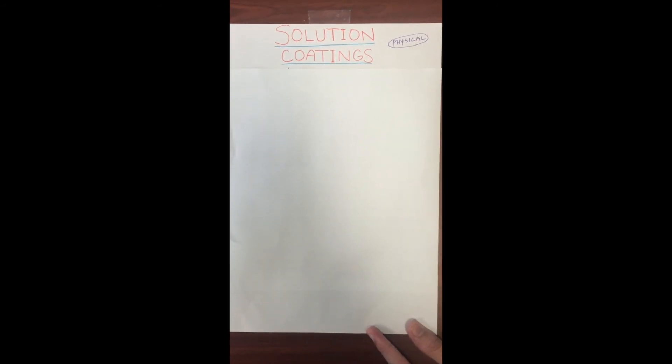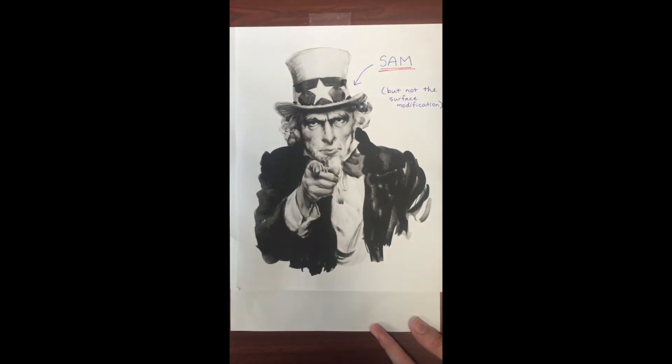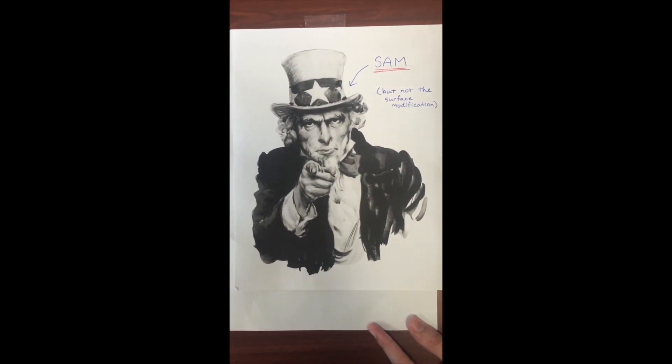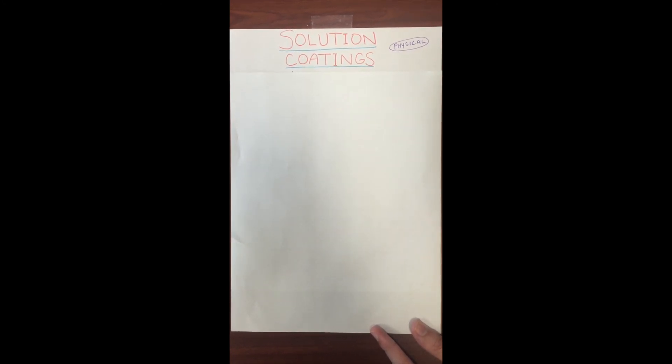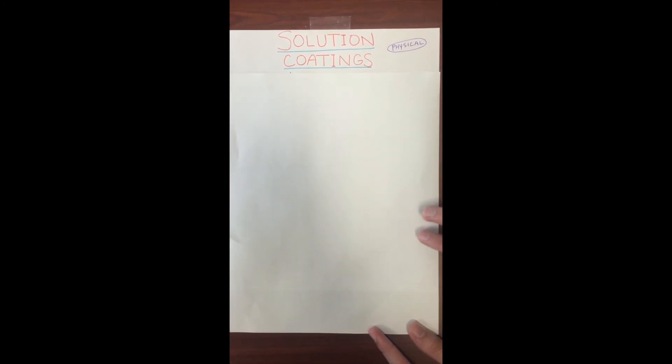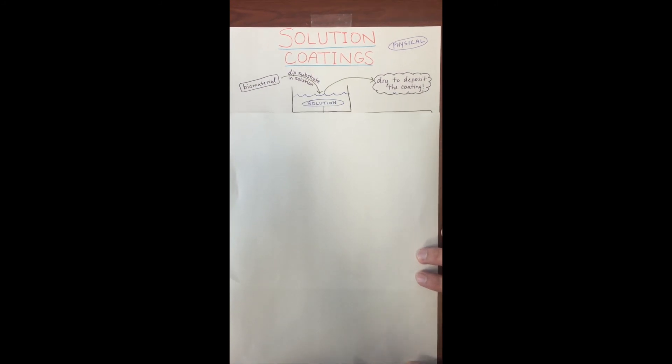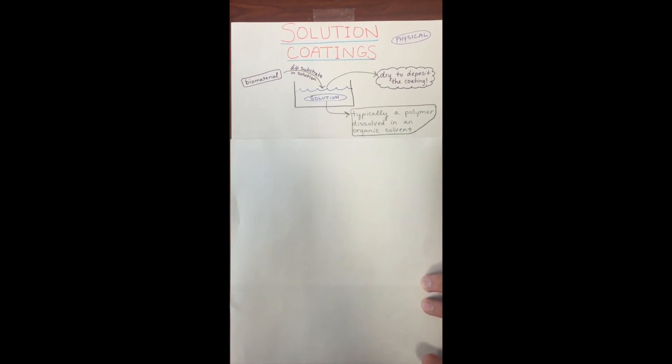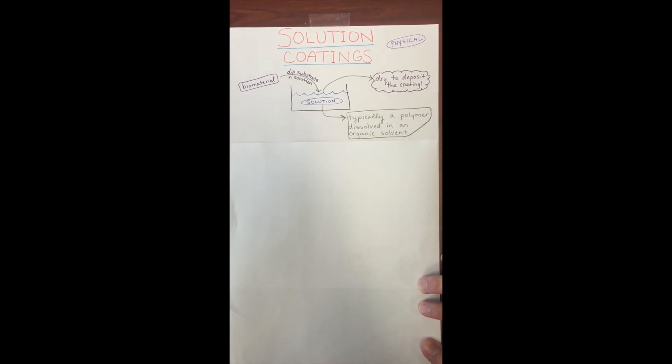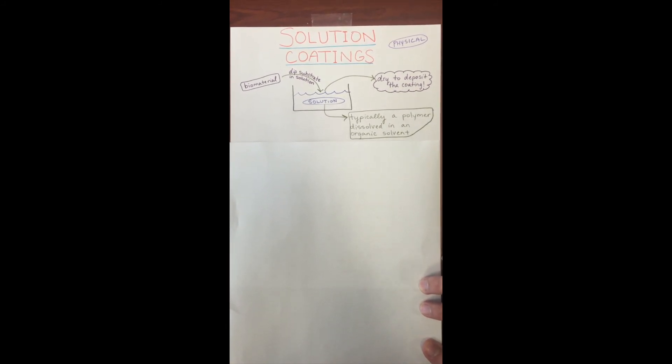Now let's talk about our second physical modification, which is a solution coating. That has nothing to do with this! Get that out of here! Moving on, solution coatings are a physical modification. The biomaterial is dipped in the solution, which is typically a polymer dissolved in an organic solvent. The material is allowed to dry in order to allow the polymer coating to deposit on the material.